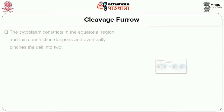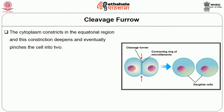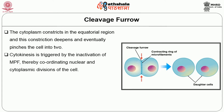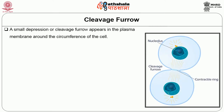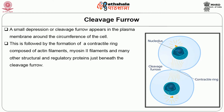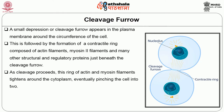The cleavage furrow: the cytoplasm constricts in the equatorial region, and this constriction, called the furrow, is deepened and eventually pinches the cell into two. Cytokinesis is triggered by the inactivation of MPF, thereby coordinating nuclear and cytoplasmic division. The first signs of cytokinesis in animal cells appear in late anaphase or early telophase when clusters of dense material accumulate at the equatorial region of the spindle. Soon thereafter, a small depression or cleavage furrow appears in the plasma membrane around the circumference of the cell, followed by the formation of a contractile ring composed of actin filaments, myosin II filaments and regulatory proteins.